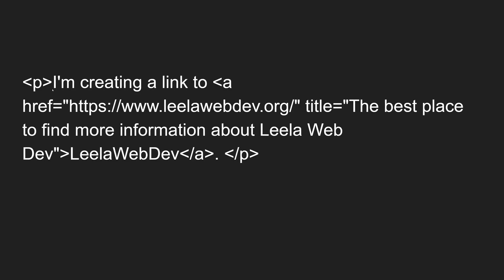Here is how we add the title attribute to an anchor link. This is a paragraph element, and I am creating a link: a href leelawebdev.org — this website does not exist, just added for reference. The href is the URL, and the title is 'the best place to find more information about leelawebdev'. Whenever people hover the mouse over the leelawebdev link, the title will be displayed as a tooltip.